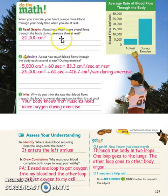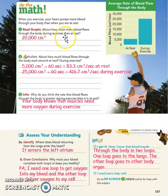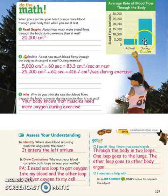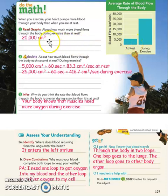Question one: read the graph — about how much more blood flows through the body during exercise than at rest? When comparing, you subtract. So 25,000 cubic centimeters minus 5,000 cubic centimeters equals 20,000 cubic centimeters more blood during exercise.